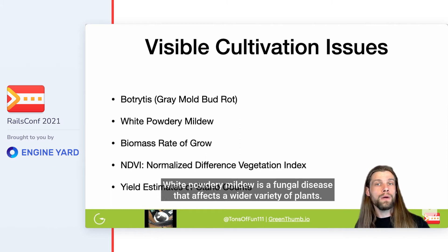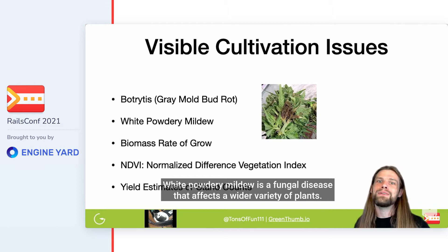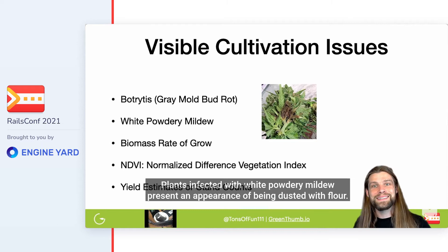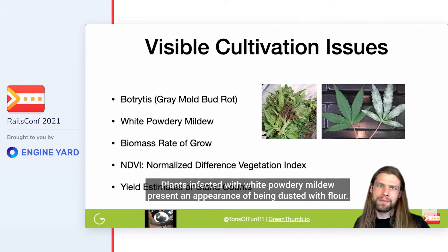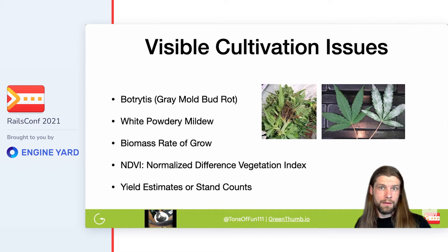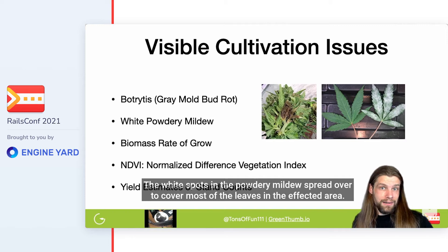White powdery mildew is a fungal disease that affects a wider variety of plants. It can slow down the growth of plants and if affected areas become serious enough, it will reduce the yield quality. Plants infected with white powdery mildew present an appearance of being dusted with flour. Young foliage is most susceptible to damage — leaves can turn yellow and dry out, twist or break, and become discolored and disfigured.